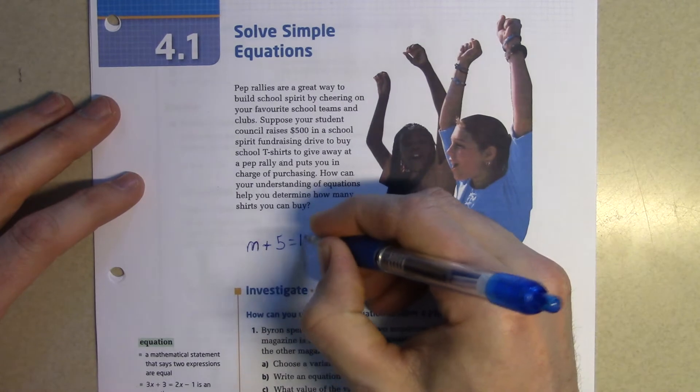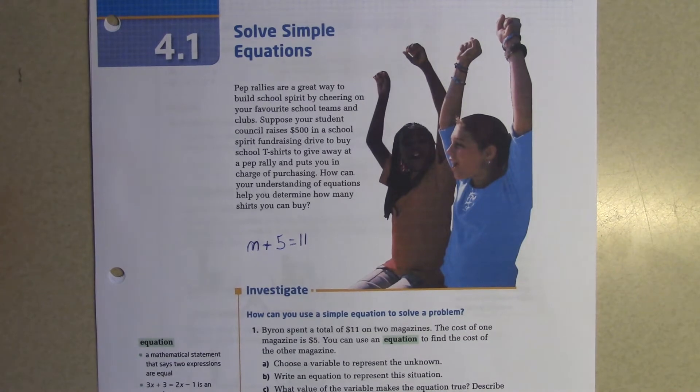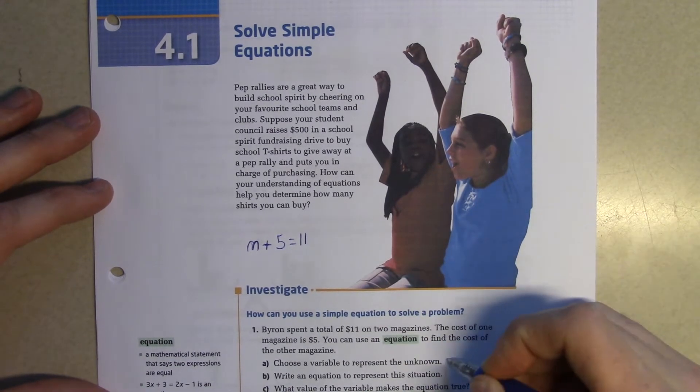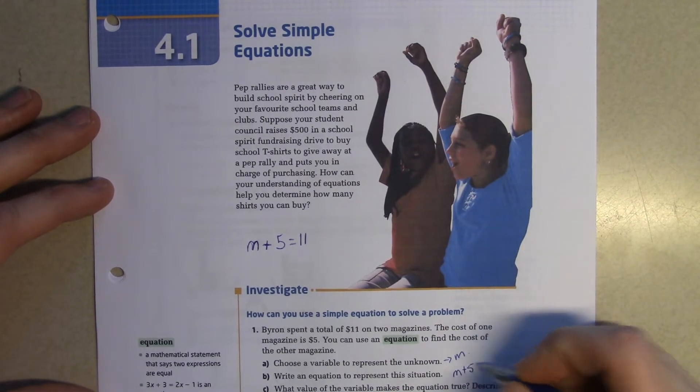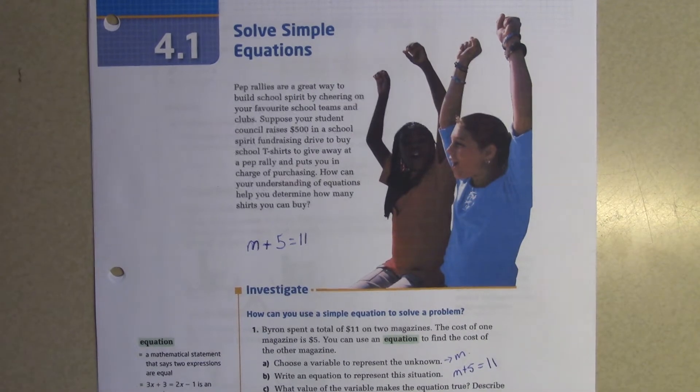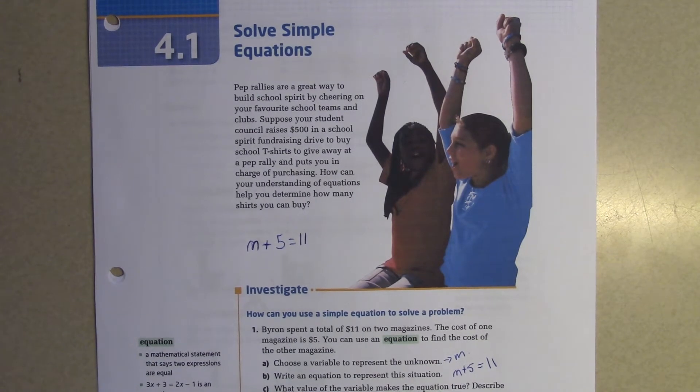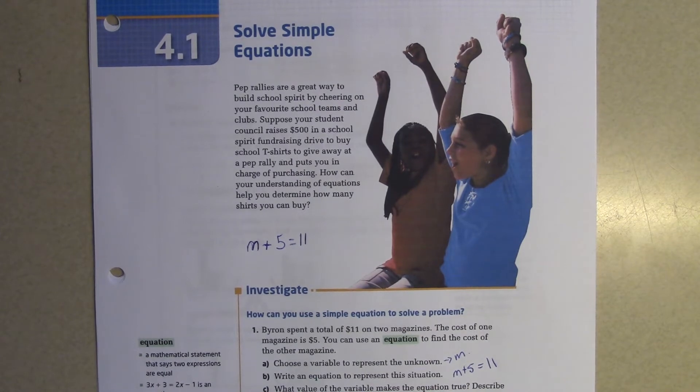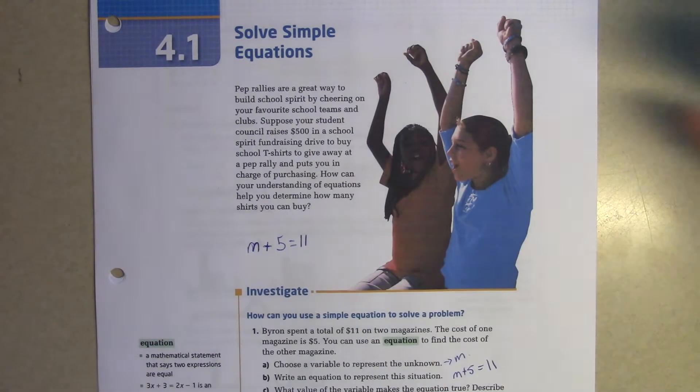Now we need to try and solve for the variable M. The first part says choose a variable to represent the unknown, so we chose that to be M. Write an equation to represent this situation. Finally it says what value of the variable makes this equation true. Some of you might know just by looking at it that the answer is 6, but we're going to get much more complex equations where you're not going to be able to just look at it and determine the answer. The way we go about finding the value of M is we move the numbers away and keep the variable on the left-hand side.